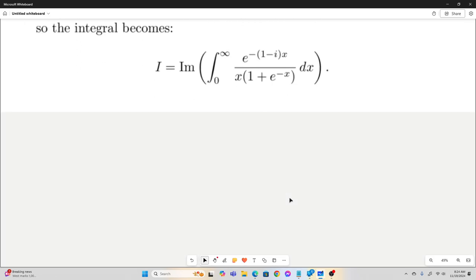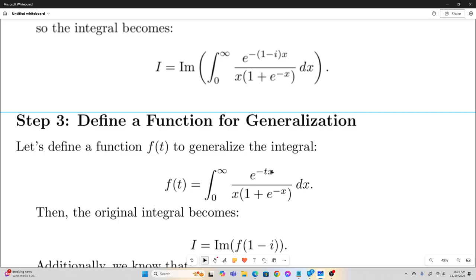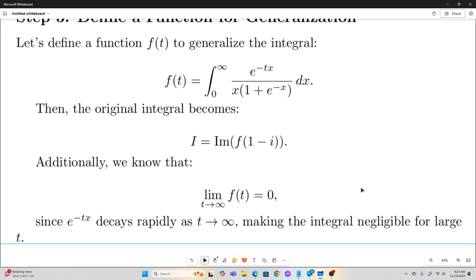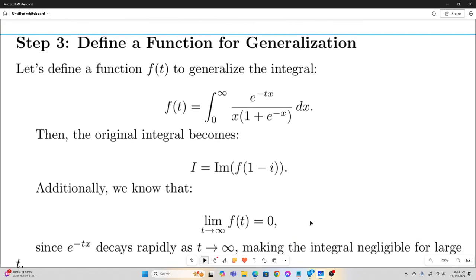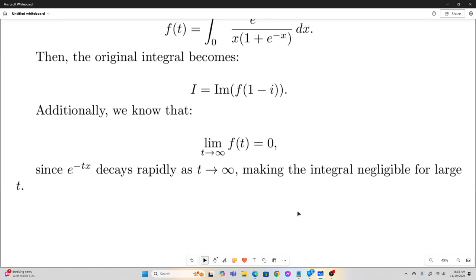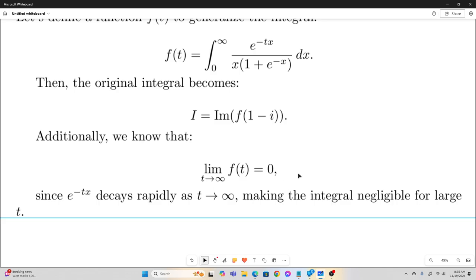And now comes time for the re-parameterization for our Feynman integration. Alright, so we're going to define f of t to be the integral from 0 to infinity of e to the negative tx over x times 1 plus e to the negative x. So our original integral is just the imaginary part of our f evaluated at 1 minus i, as you can see. And additionally, we know that the limit as t approaches infinity of our f of t is going to give us 0. So basically, we're saying that f of infinity is equal to 0.